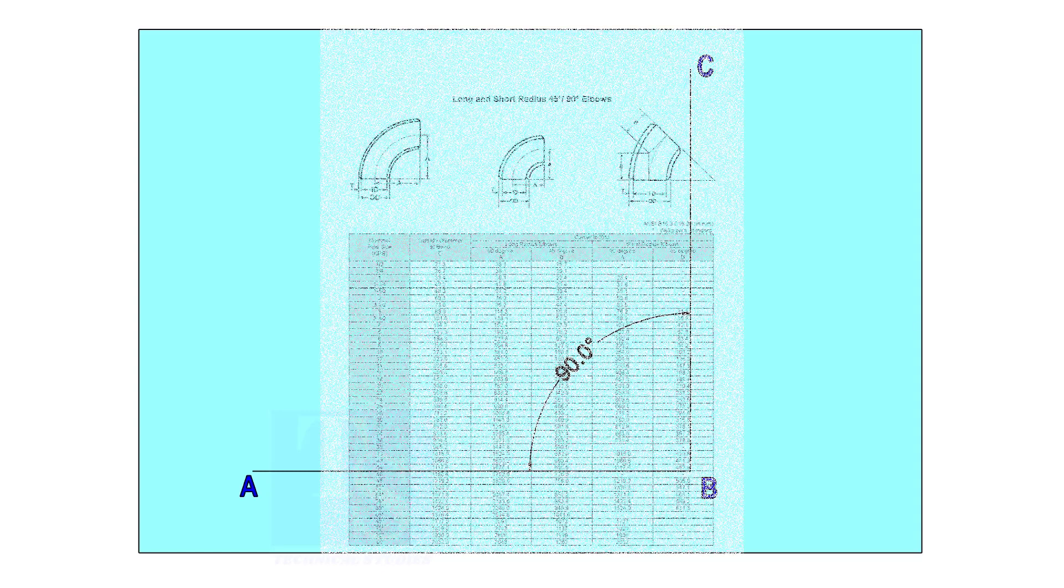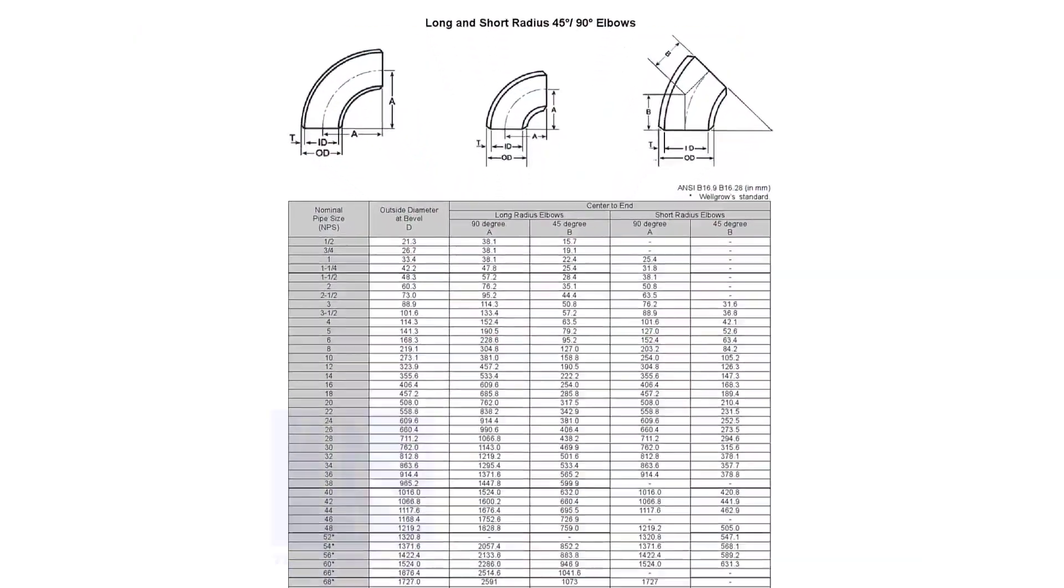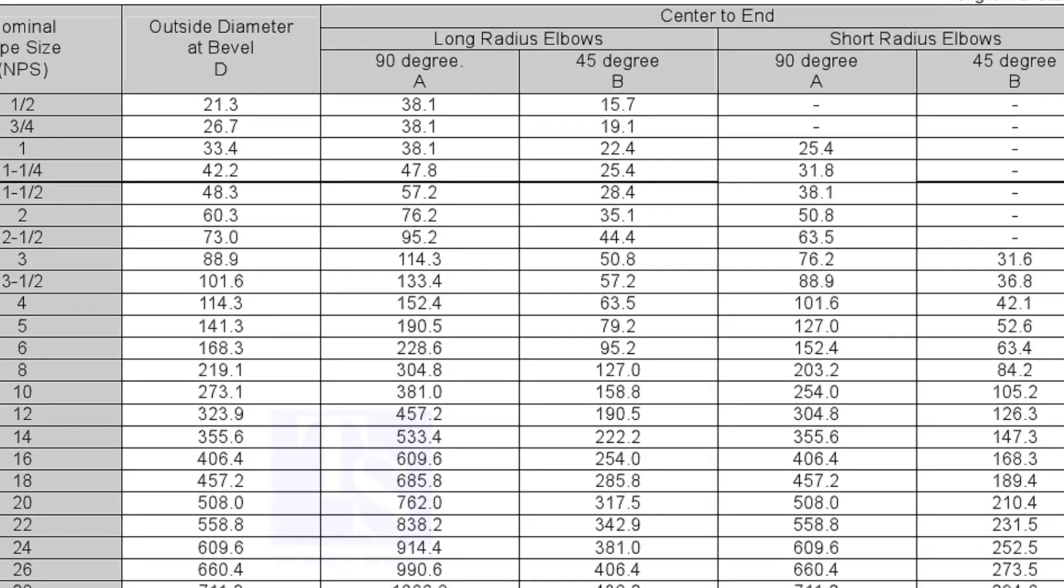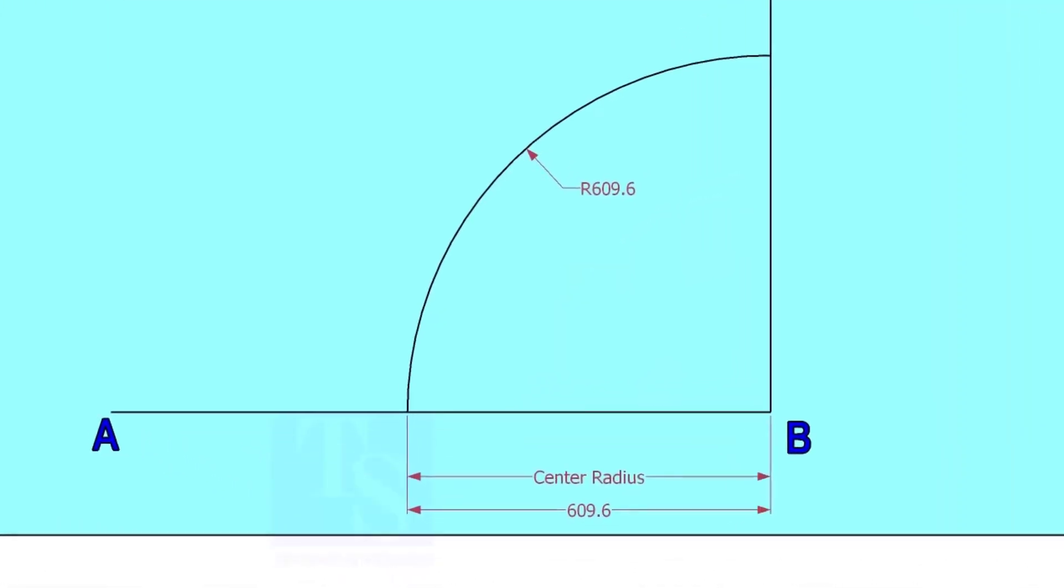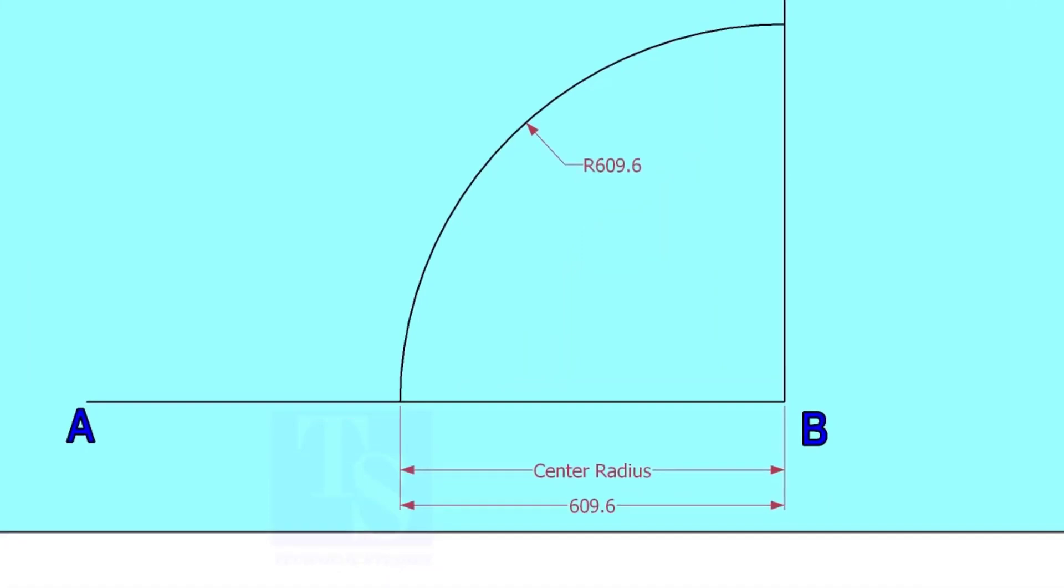Let us mark a 25-degree elbow on a 16-inch large radius elbow. Mark line AB and a perpendicular line BC. Let us check the center radius of 16-inch long radius elbow. Draw an arc with the center radius 609.6 millimeters.